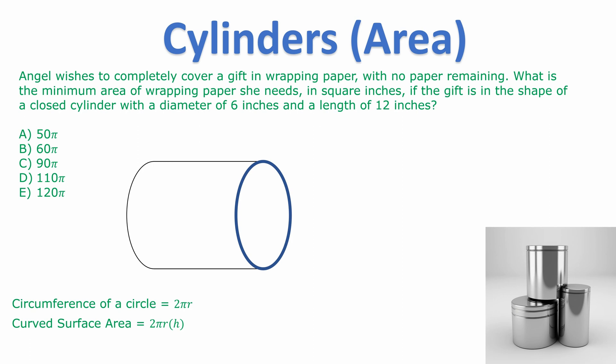Hopefully you started by finding the curved surface area. That's 2πrh. And did you notice I gave you a diameter instead of a radius? So we have to halve that to get the radius. Half of 6 is 3. Putting that into the formula and we work out that the curved surface area is 72π.